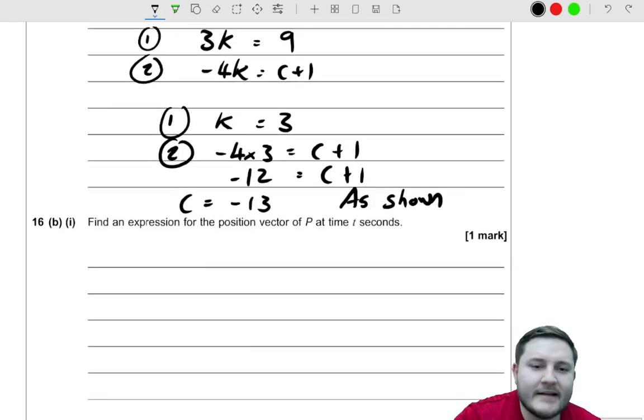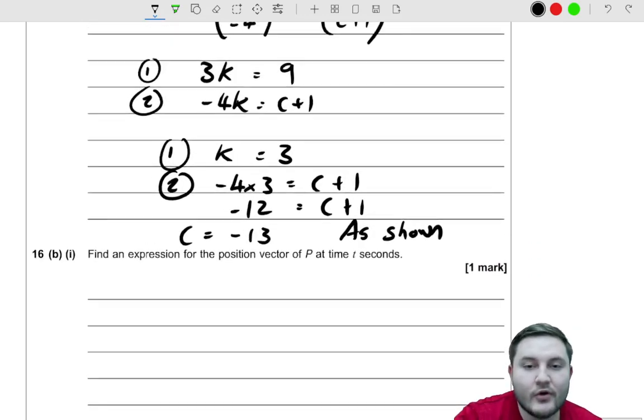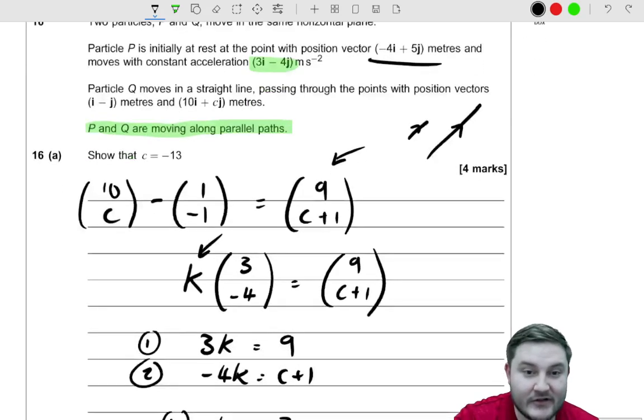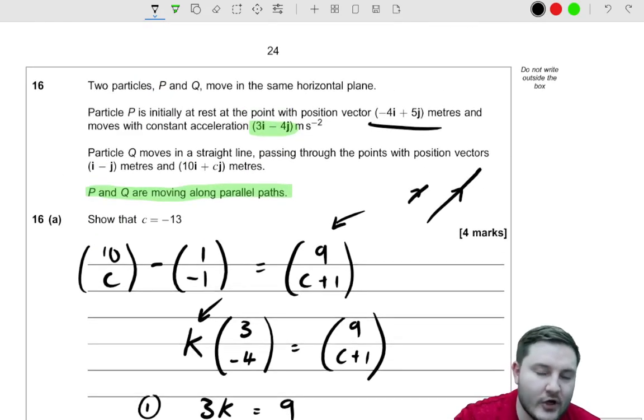Right then. Find an expression for the positional vector of P at time T. So let's just consider all the information that we know. Well, we want an expression of the positional vector in terms of T. So we don't know the positional vector. We don't know T, but we're going to give it in terms of T. We do know the bits of info, though.